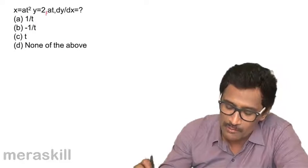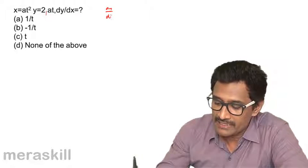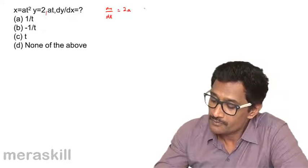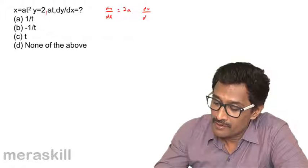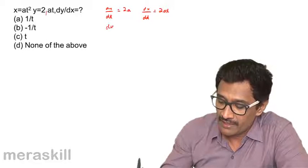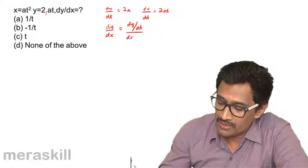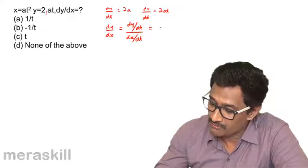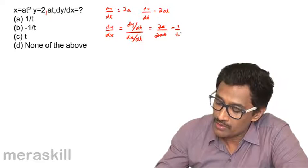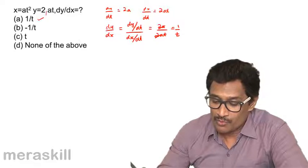We find dy/dt, which is the derivative of 2at = 2a. Then dx/dt is the derivative of at², which is 2at. So dy/dx = dy/dt divided by dx/dt = 2a / 2at, which is nothing but 1/t. So we have 1/t as the correct answer.